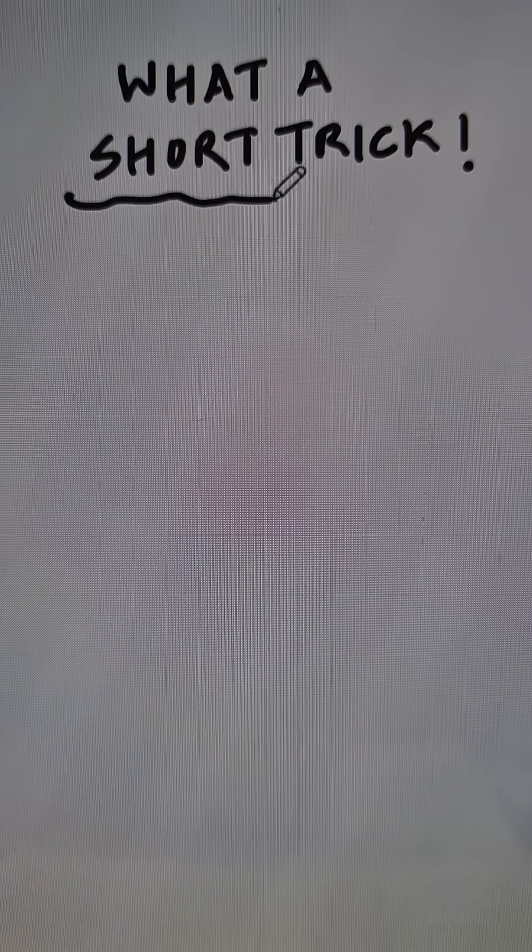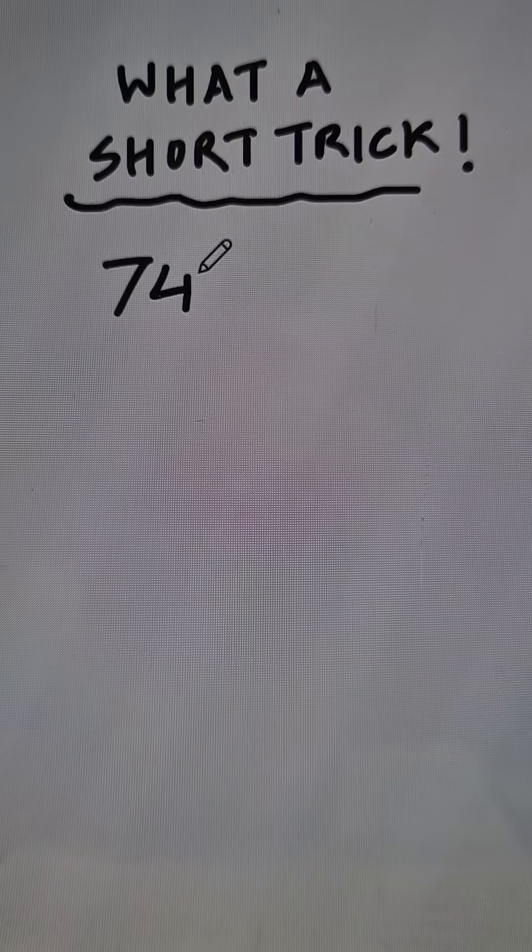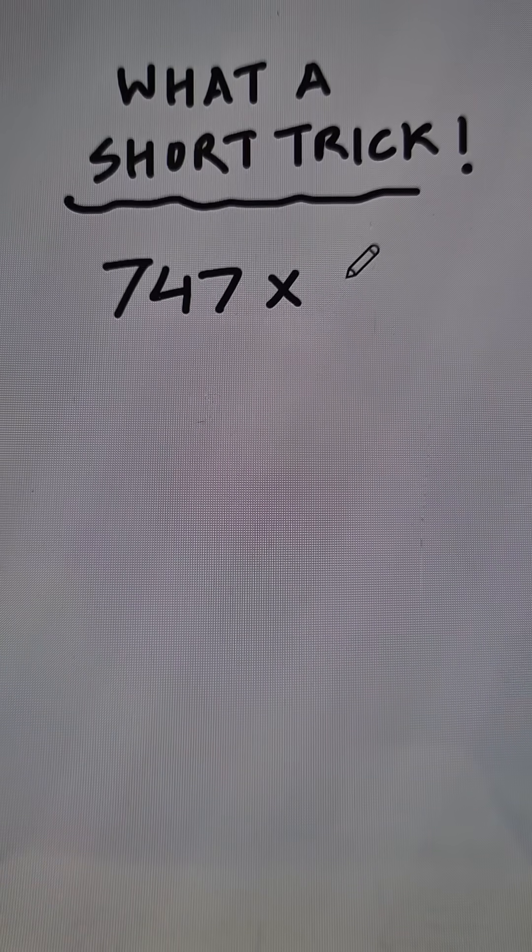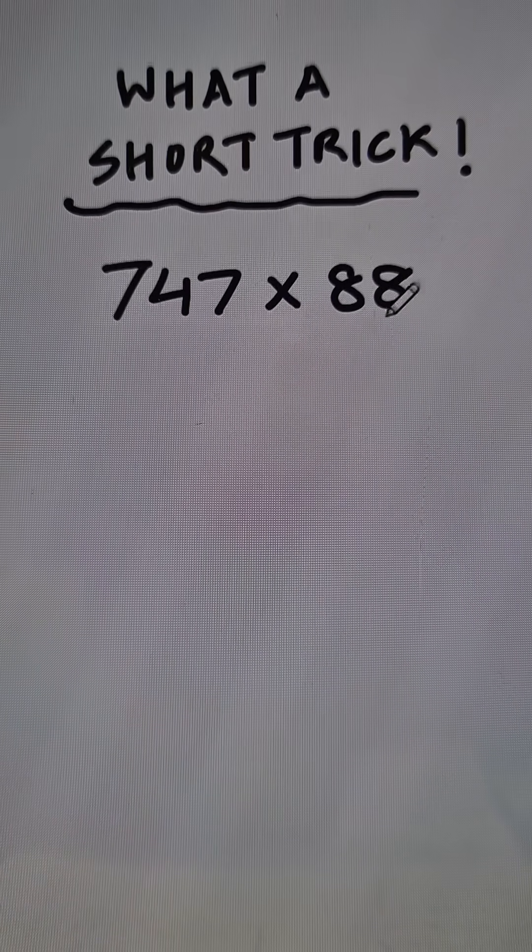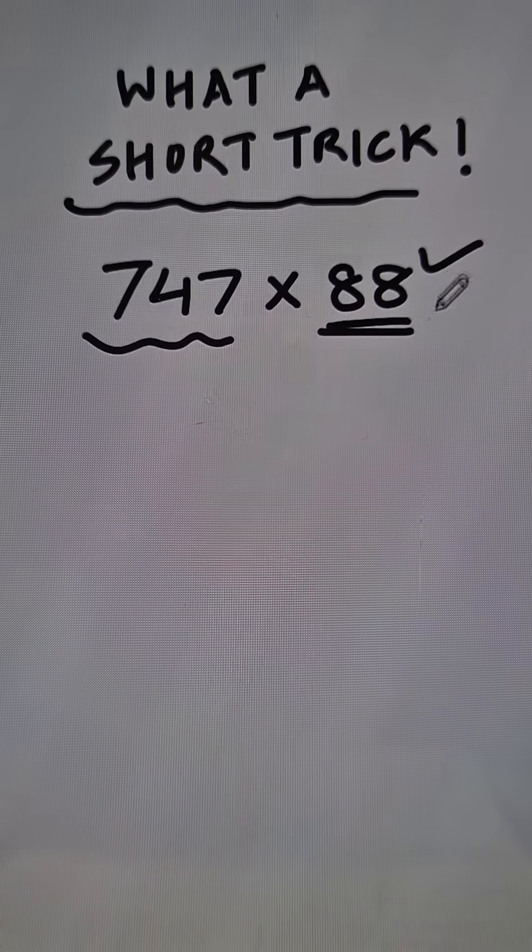Here is an amazing short trick for multiplying numbers. Let's say we have a number like 747 and we want to multiply that by a doublet, say 88. You can use this trick to multiply any number by any doublet.